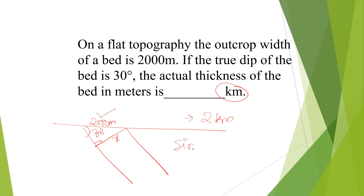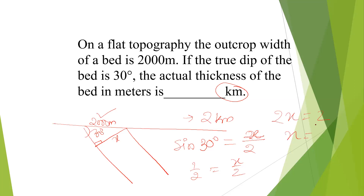Using the same formula with the outcrop width as 2 km: sin 30 equals x over 2, so 1/2 equals x/2, meaning 2x equals 2, and x equals 1. The answer is 1 km. If you keep 2000 meters, you'd get 1000 meters — which is correct — but always convert to the appropriate unit to ensure you get full marks.